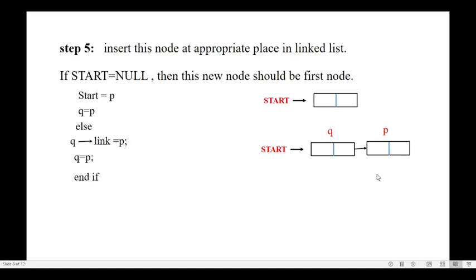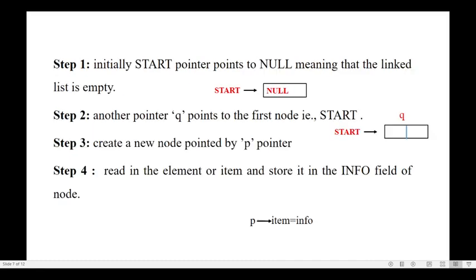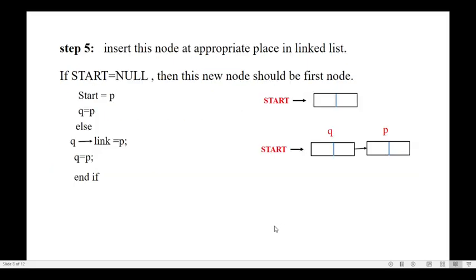You have the facility to create any number of nodes using this method. First check if start is null — that indicates there is no node. Create a new node, make it q, and read the information from the user and assign it to p's item field. When creating the next node, make it p, assign q's link to point to p, then make p the new q. Again create a new node as p, and q's link should again point to p.